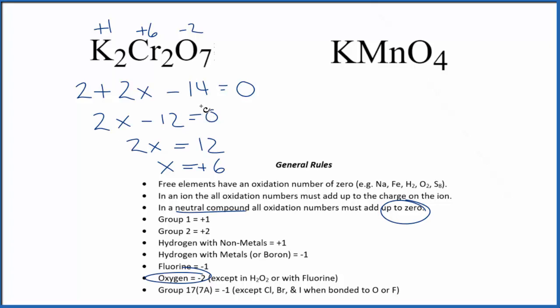So that's how you find the oxidation number for each of these elements here in K2Cr2O7, the potassium dichromate. Let's do the potassium permanganate here.